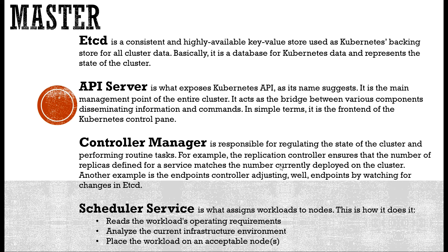The first master component is etcd — a consistent and highly available key-value store used as Kubernetes' backup store for all cluster data. Basically, it is a database for Kubernetes data and represents the state of the cluster. The second is the API server. This is the Kubernetes API — the main management point of the entire cluster. It acts as the bridge between various components, disseminating information and commands. In simple terms, it is the frontend of the Kubernetes control plane.